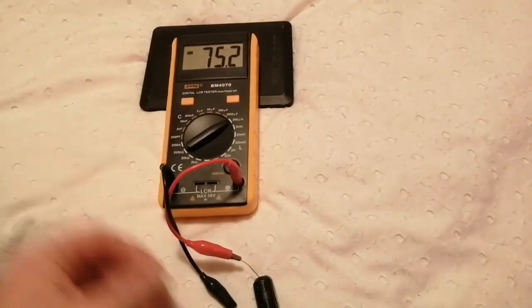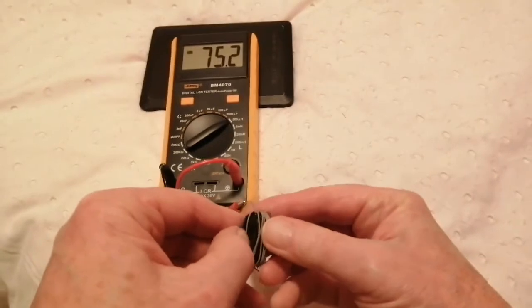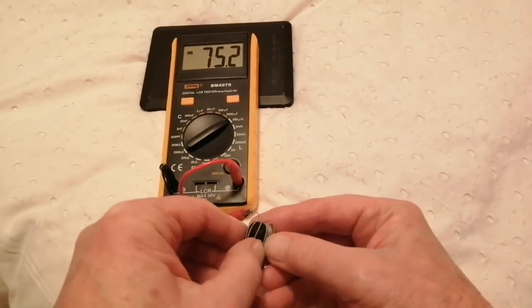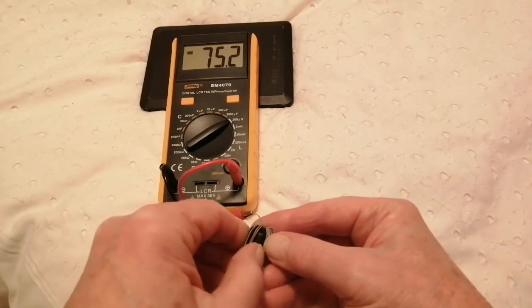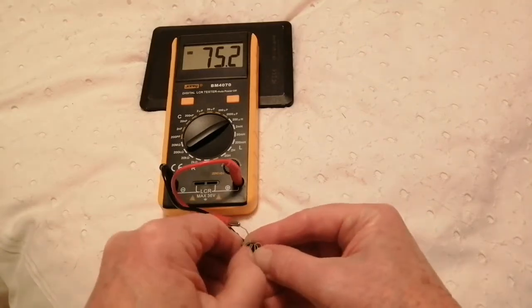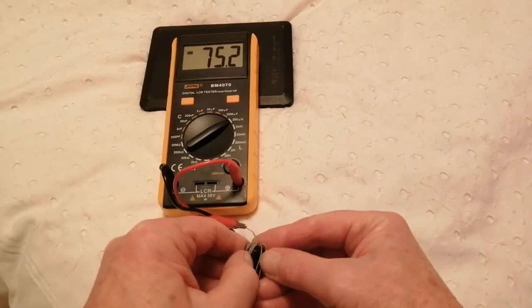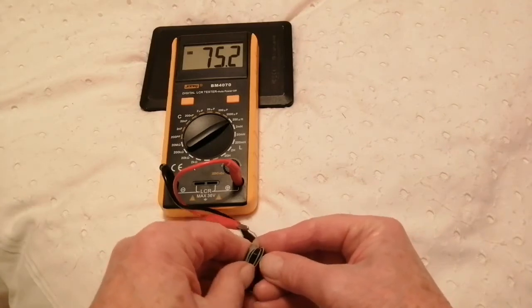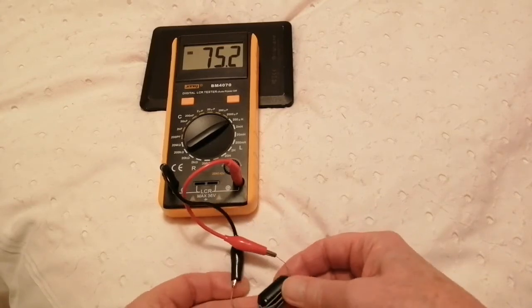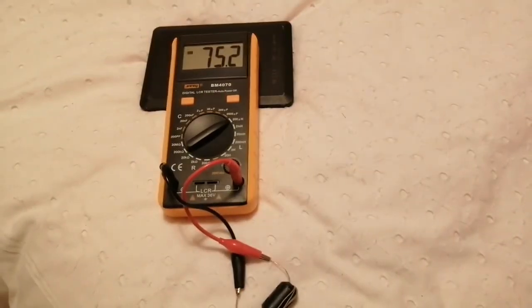Right, how many turns is that? 1, 2, 3, 4, 5, 6, 7, 8, 9 turns, 10 passes through the core, and 75.2 microhenries.